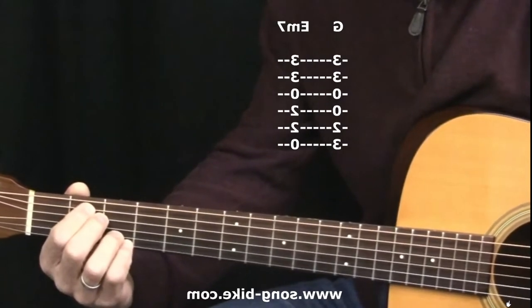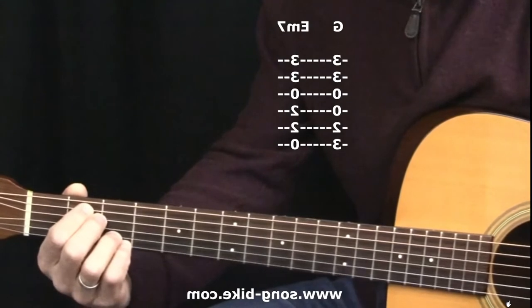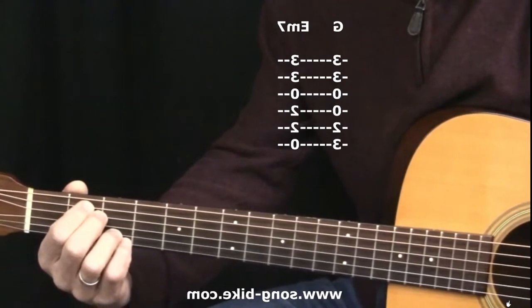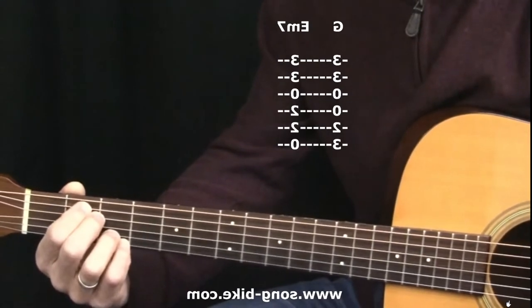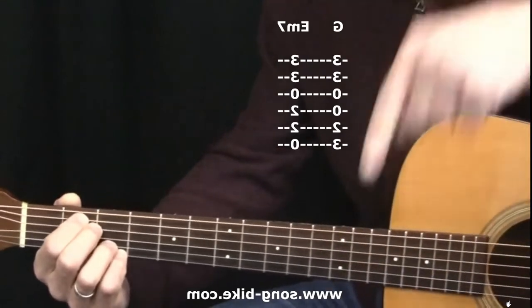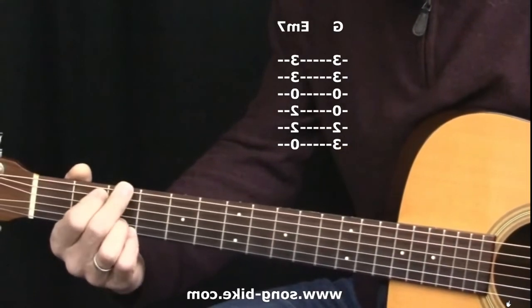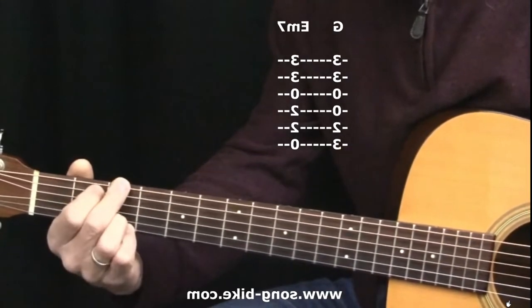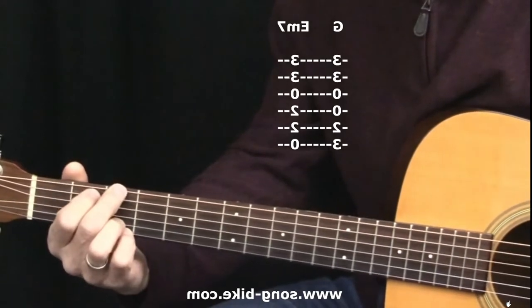You can find it on my YouTube channel and even more extensively on my website song-bike. So a G and E minor seven, a four finger G and E minor seven. Let's talk about what you can do with those.